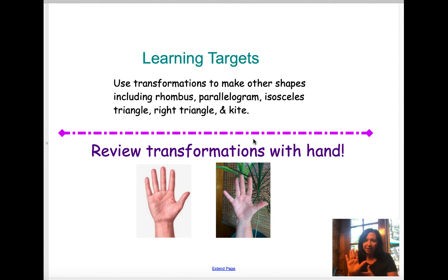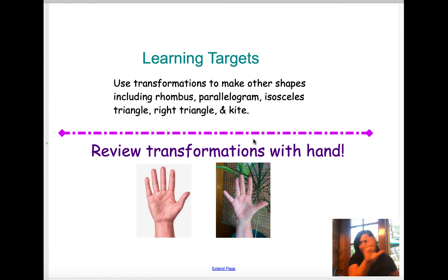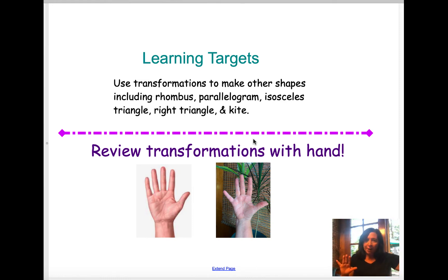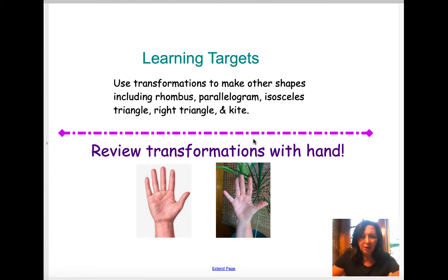Every time we do a transformation, we have our pre-image, and when we move on to our image — if this was point A, then when I move it to another point, reflect it, or do something like that — that's going to be A prime. And if I move it again after that, that would be A prime prime. So we talked about mapping and symbols for reflections and transformations — the proper ways to write all of that.